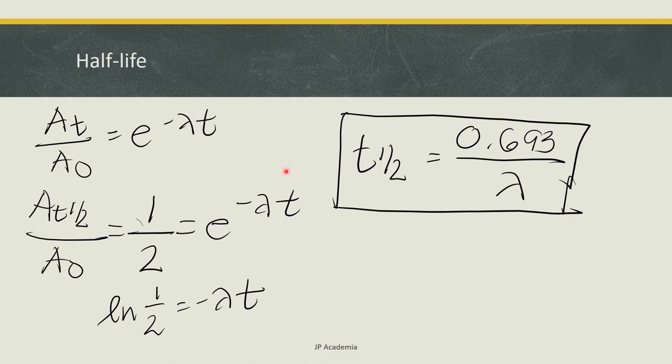Then, by solving this one, solving for t, we can get the expression for the half-life, which is equal to ln(2) or 0.693 over lambda, which is your decay constant.